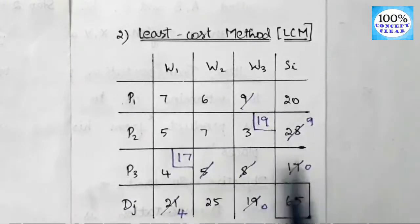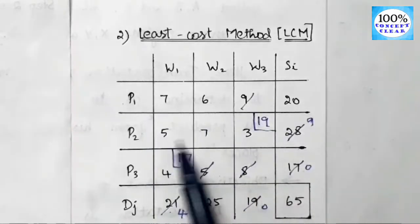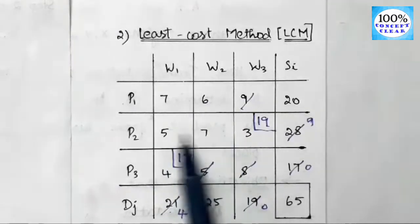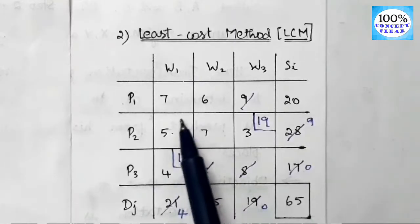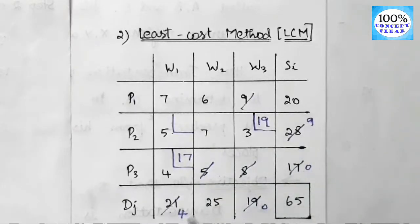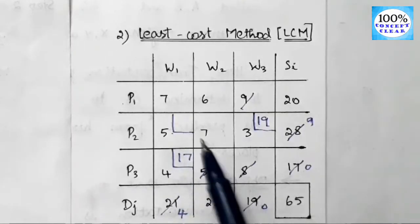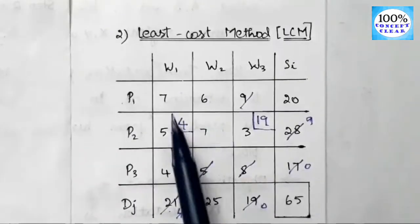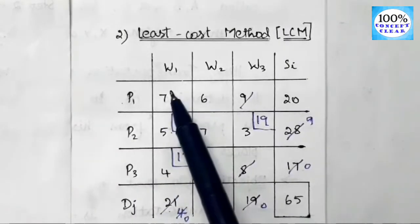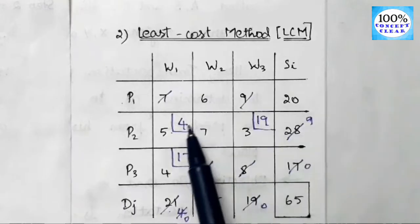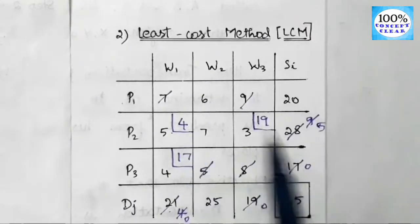For the third allocation, the remaining cost elements are 7, 6, 5, 7. The least value is 5, so we locate that cell. Compare demand and supply: supply is 9 and demand is 4. The least value is 4, so we allocate 4 to that cell. Third allocation is complete.